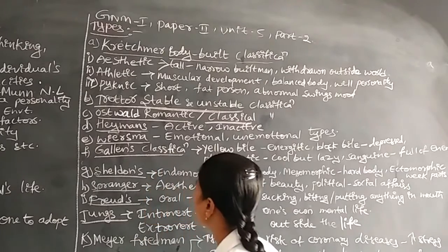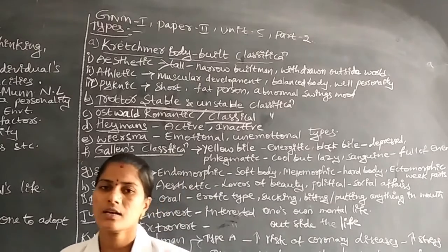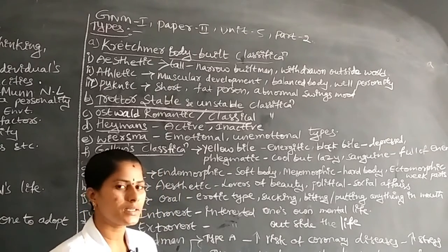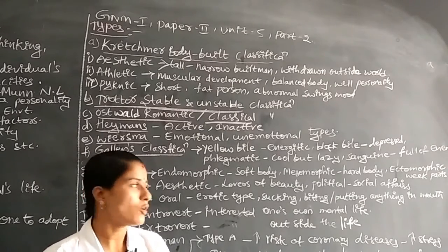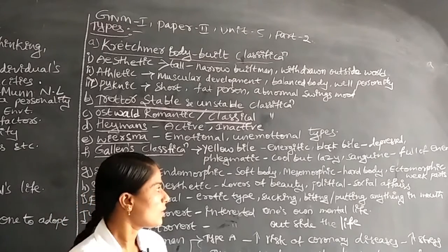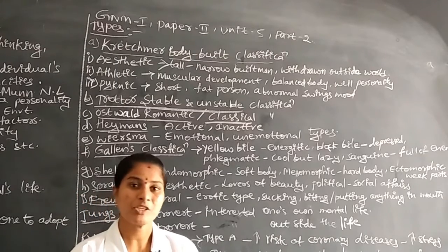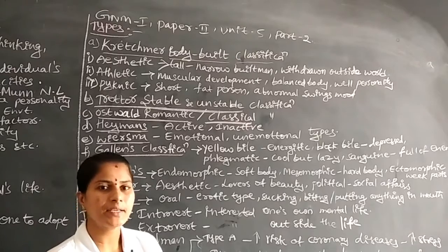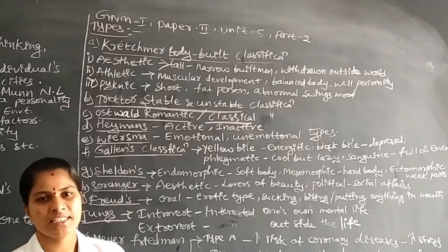Next is Galen's classification. In this, the psychologist focuses on body fluids. The first is yellow bile — persons with yellow bile are full of energy. Another one is black bile — those persons have a depressed personality. Another type is phlegmatic — these individuals are cool but lazy.